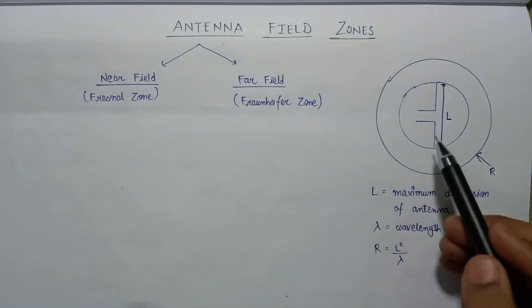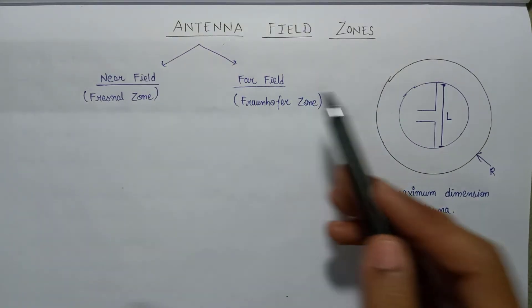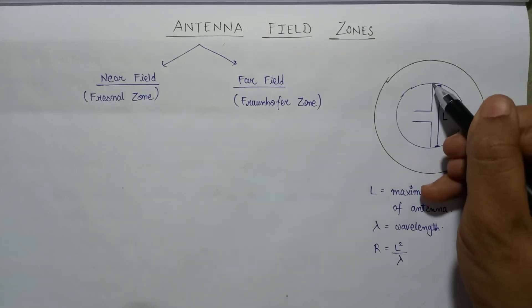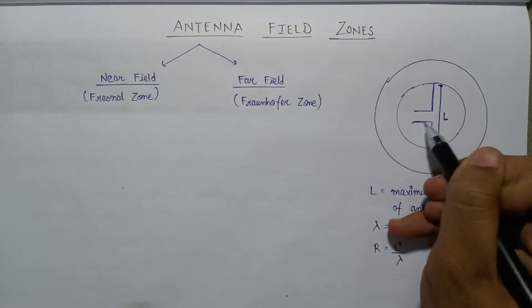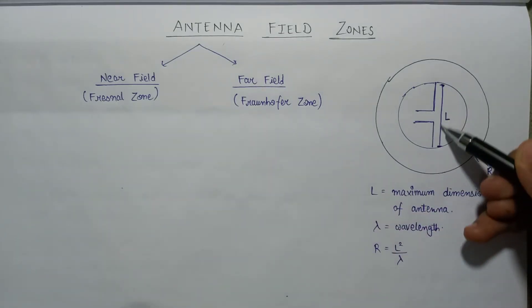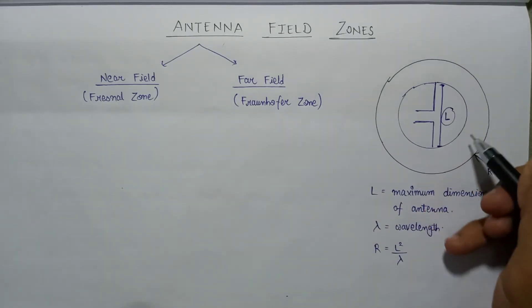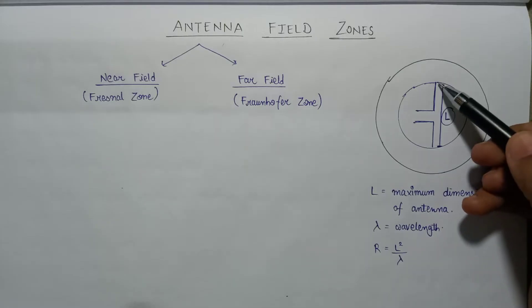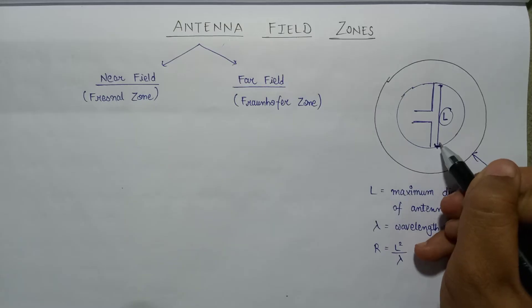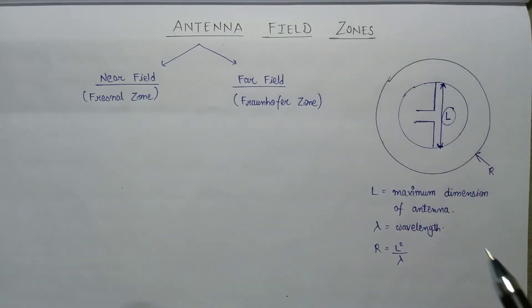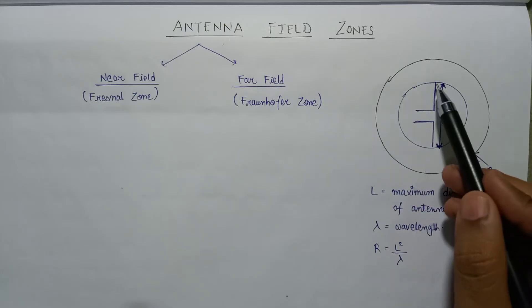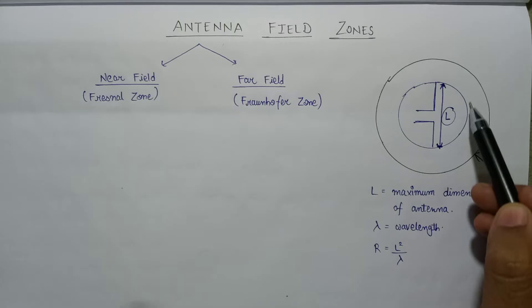Let us understand the near field and the far field by the help of a dipole antenna. This is the dipole antenna having two poles, and let the length of this dipole antenna be L. Here is the length of the dipole antenna marked from point to point.